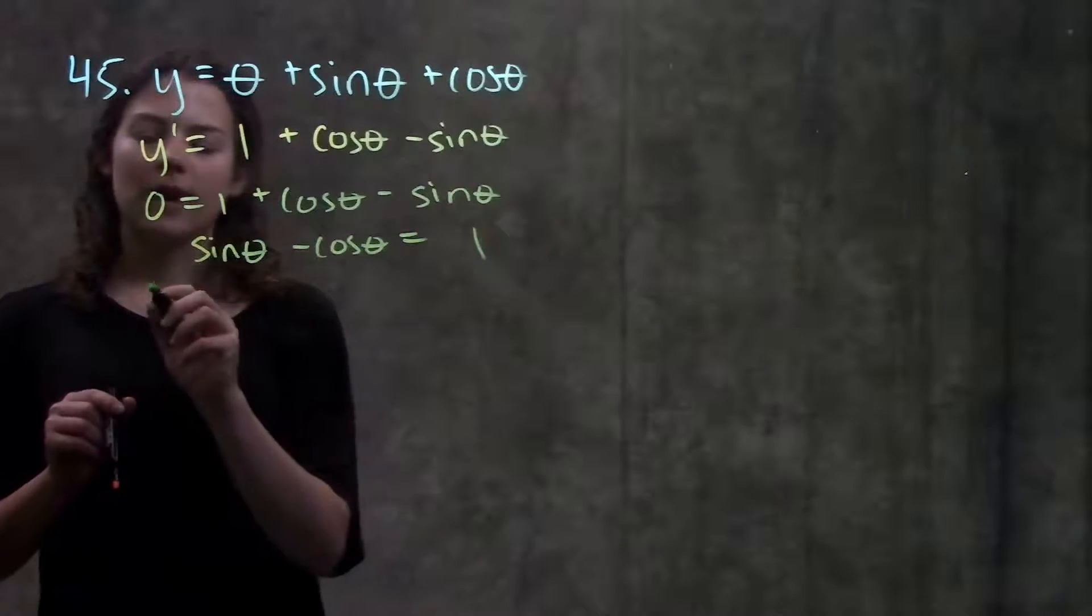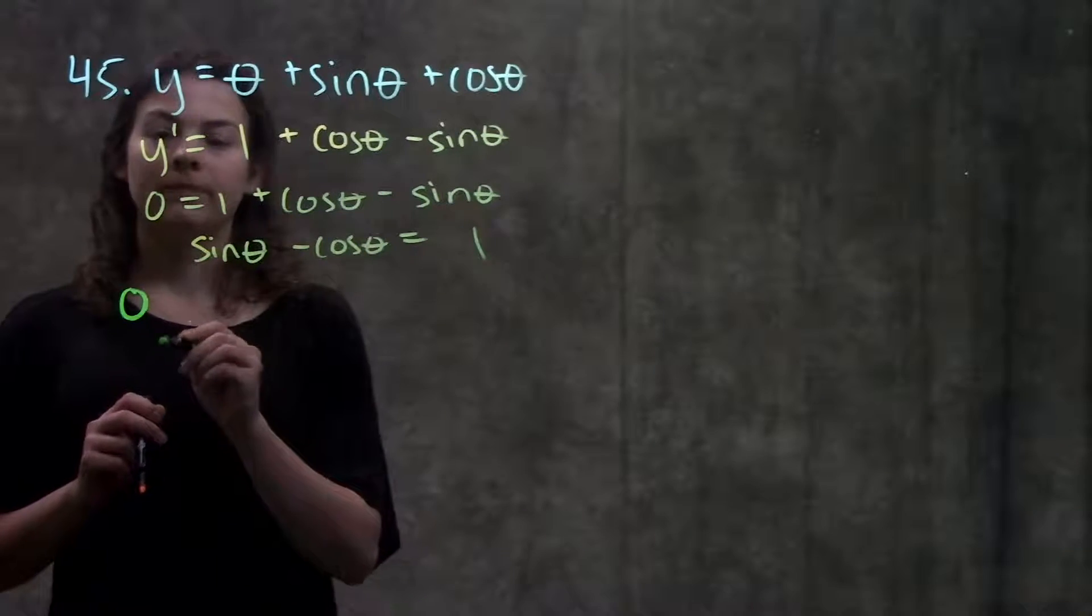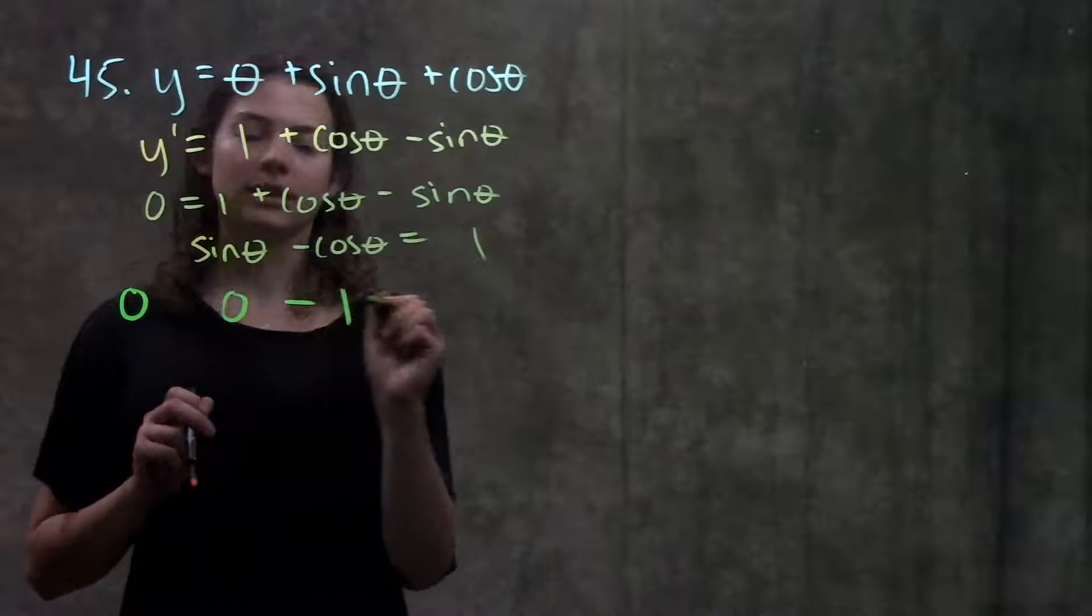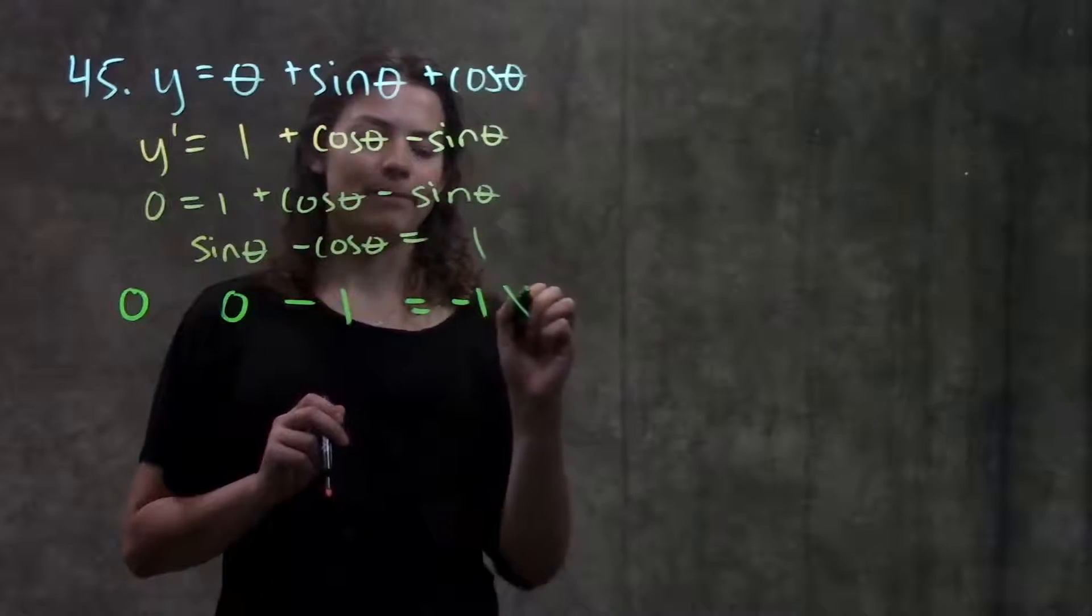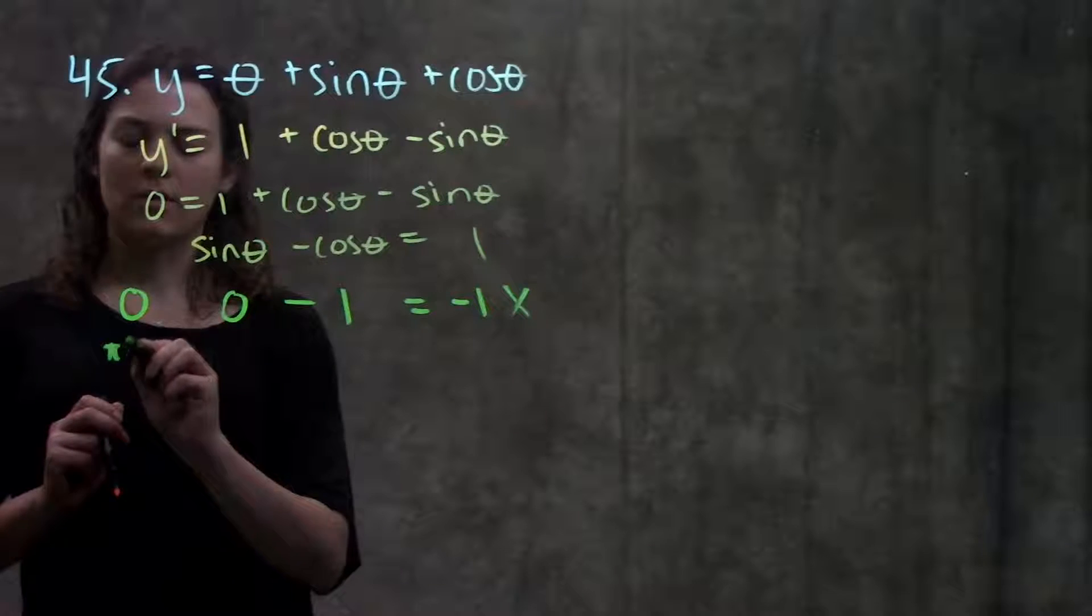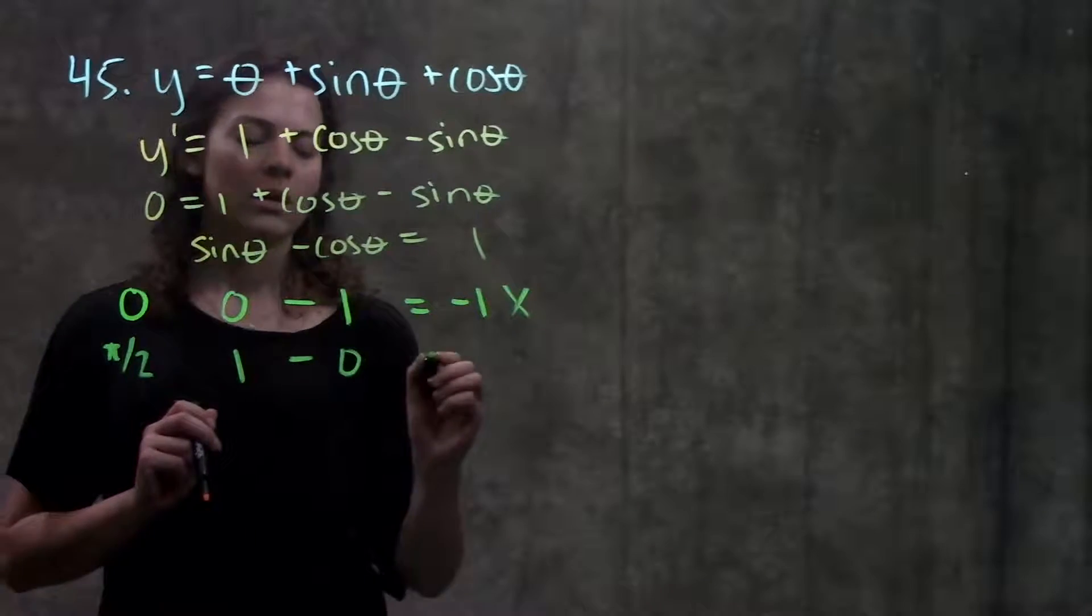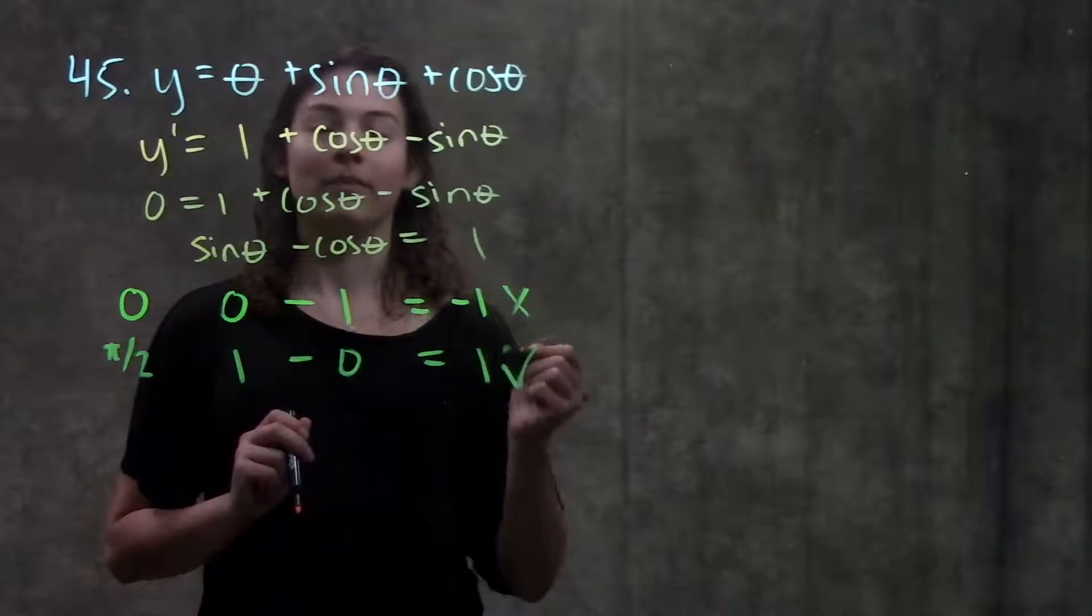So for example let's say that we had theta equals zero. At zero, sine is equal to zero, minus cosine is one, zero minus one, negative one, that doesn't work. Okay let's move to the next one though. At pi over two, sine is one, cosine is zero, one minus zero gives me one, that works.